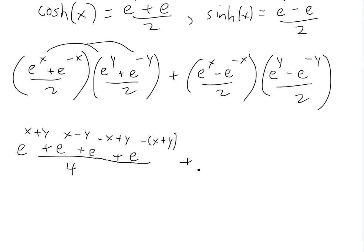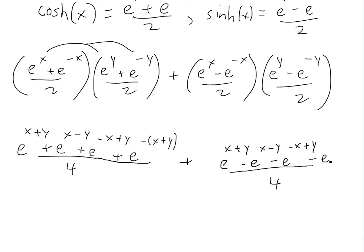Now the second product is also divided by 4. FOILing sinh(x) times sinh(y): e to the x times e to the y gives e to the x plus y. Then e to the x times negative e to the negative y gives negative e to the x minus y. Then negative e to the negative x times e to the y gives negative e to the negative x plus y. And negative e to the negative x times negative e to the negative y gives positive e to the negative (x plus y).